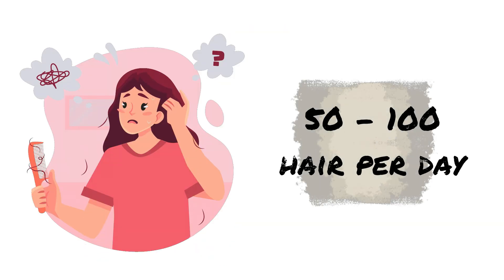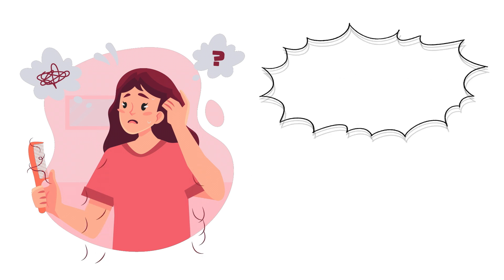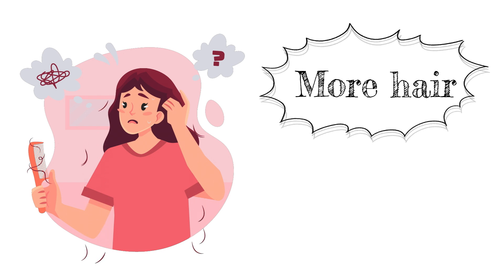It is normal to shed between 50 and 100 hairs a day. When the body sheds significantly more hair every day, a person has excessive hair shedding or hair fall.